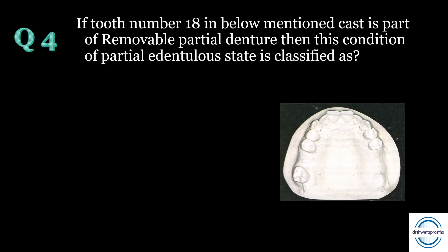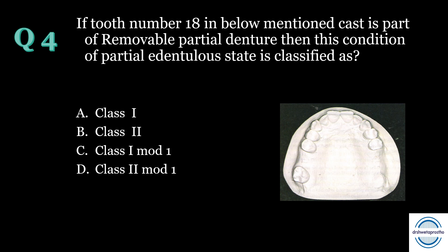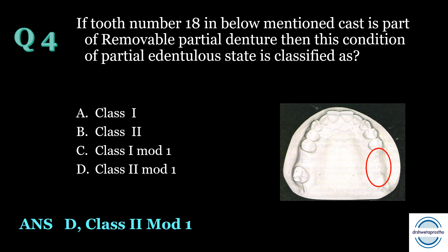Question number four: if tooth number 1-8 in the given figure is part of a removable partial denture, then this condition of partial edentulous state is classified as — A. Class 1, B. Class 2, C. Class 1 mod 1, D. Class 2 mod 1. It is again an application of Kennedy's classification. The answer is D, Class 2 mod 1, as it is a unilateral posterior edentulous space with one modification space.